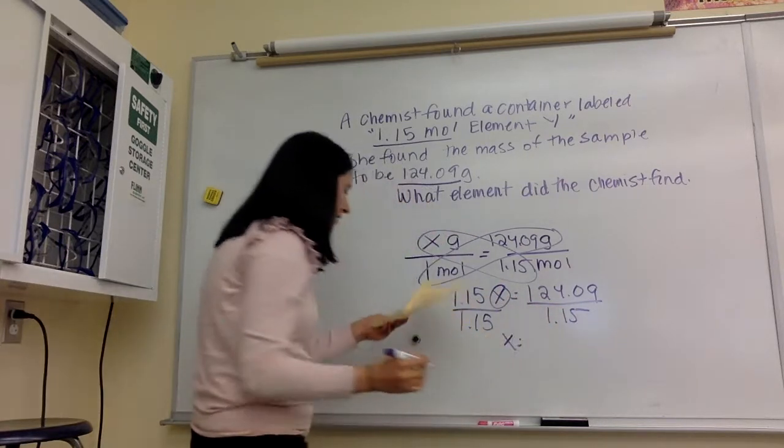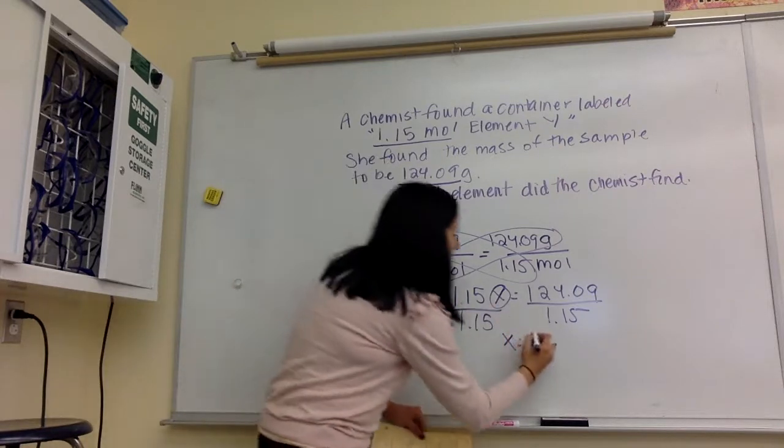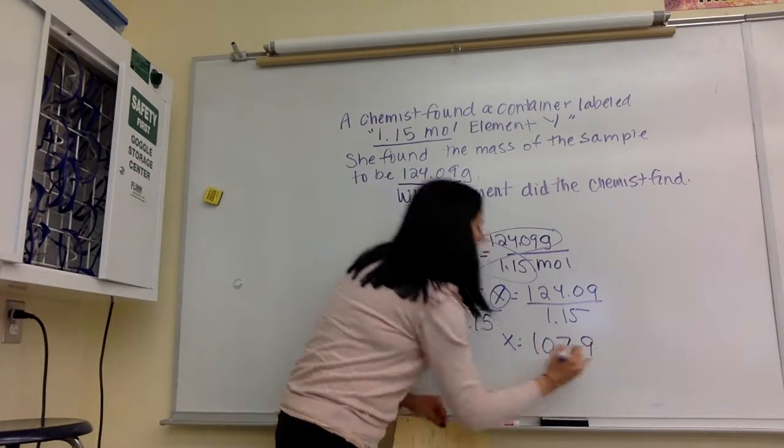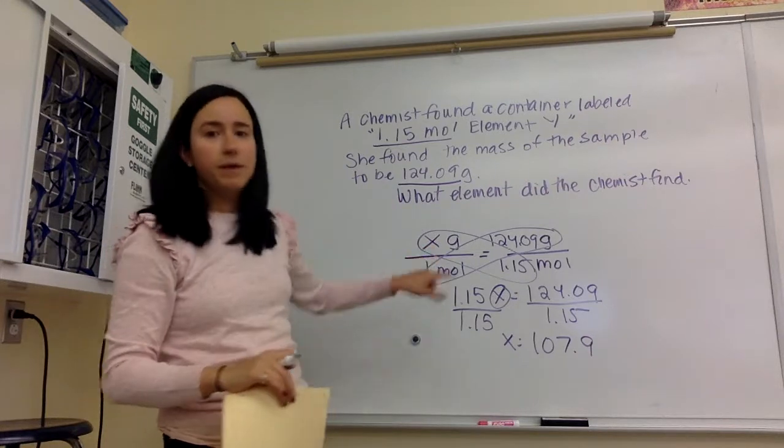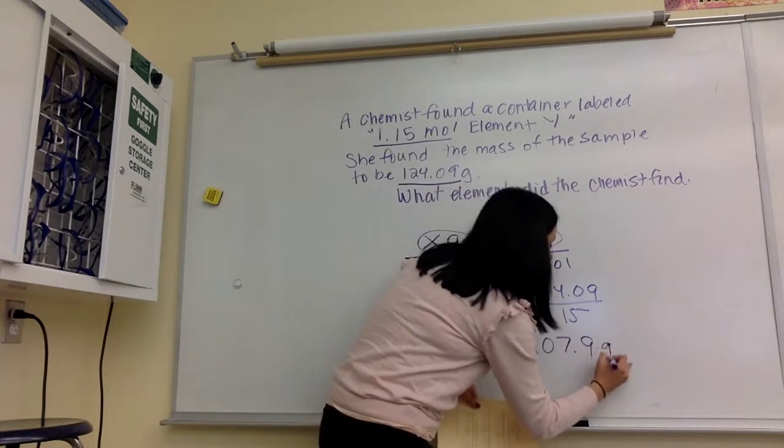And I find x is equal to 107.9. Now, remember the unit for molar mass, because that's what we were calculating with molar mass. The unit is grams per mole.